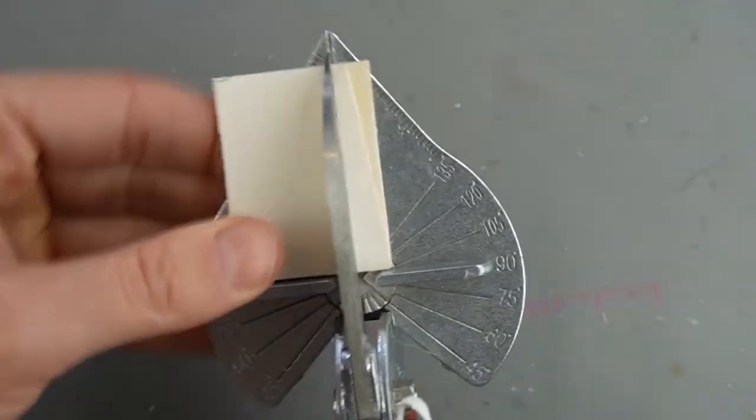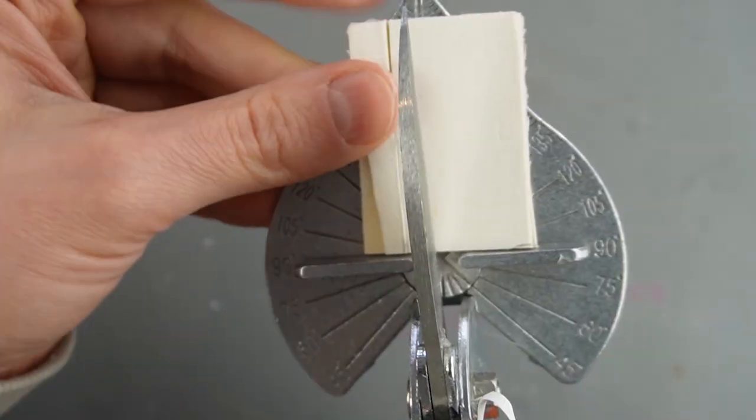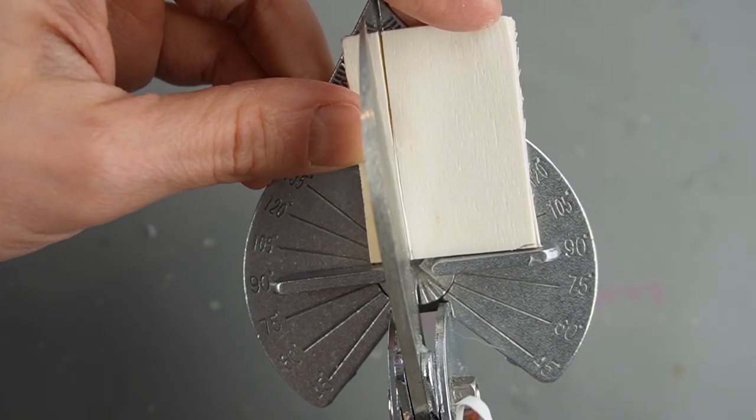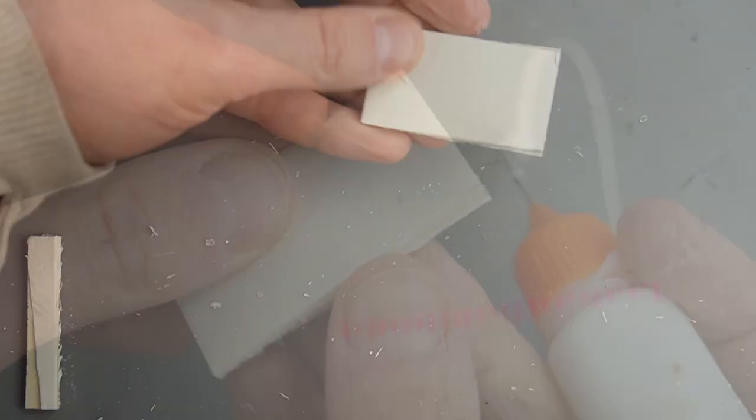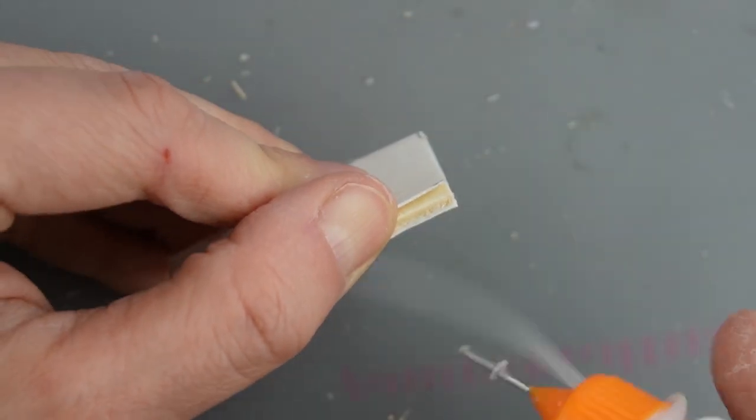Whenever my miter shears have a hard time cutting through a piece of wood, I cut from both directions until the blade goes through. This is really cheaply made plywood.